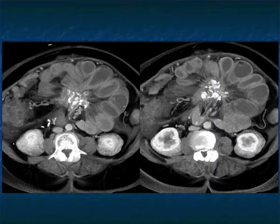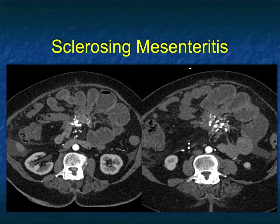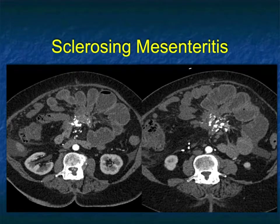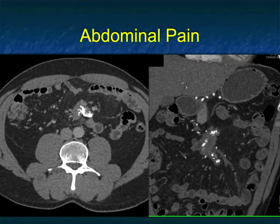This was confirmed sclerosing mesenteritis — a very impressive example. Dense calcifications, small bowel obstruction, stretching and adherence of the mesentery. A very difficult example indeed.